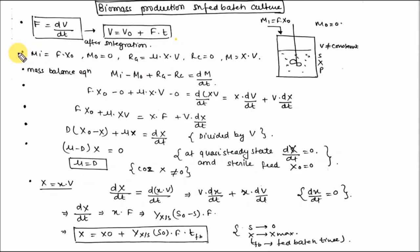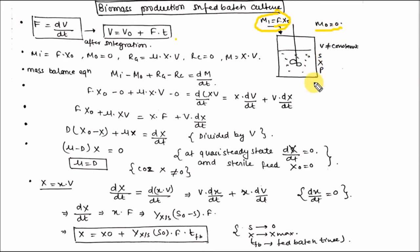Let's discuss biomass production in fed batch culture. In fed batch culture, there is intermittent or continuous feeding, so Mi is not 0 — Mi equals F·x₀, where x₀ is the initial biomass concentration. There is no continuous removal of product, so Mo is 0 (mass out is 0). Rate of generation of biomass is similar to batch culture: rate of generation is μ·x·V and rate of consumption is 0, assuming Kd equals 0.